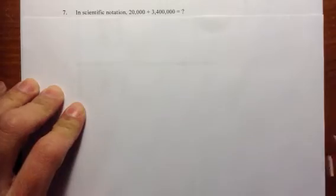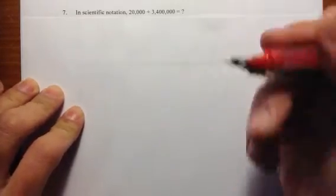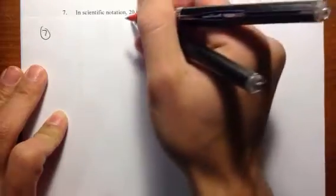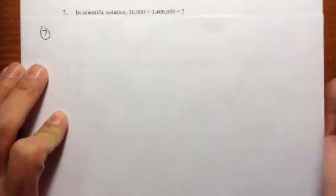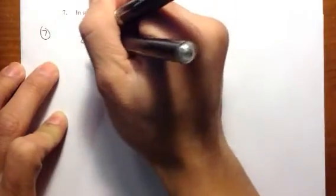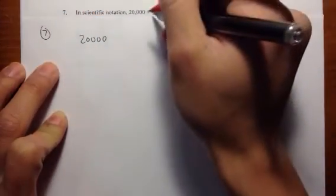So before I talk about what scientific notation is, let's just add number 7. Let me line up to the right from what I'm trying to add. So I have 20,000 like this.